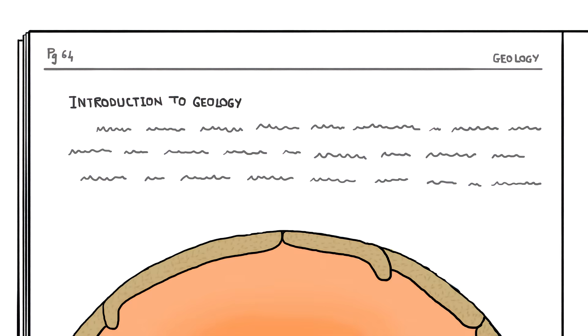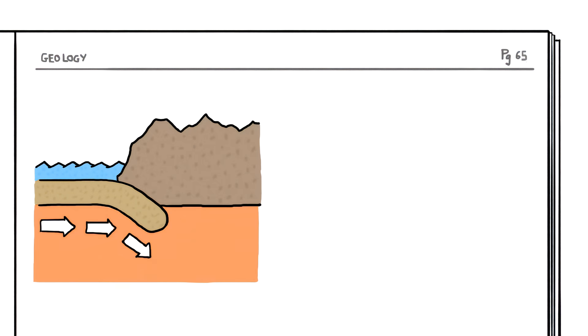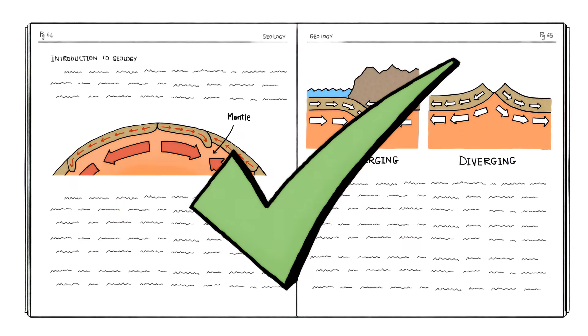The common simplified explanation for why tectonic plates are moving is that they're carried along on currents in the upper mantle, the slowly flowing layer of rock just below Earth's crust. Converging currents drive plates into each other, diverging currents pull them apart. This is mostly true.